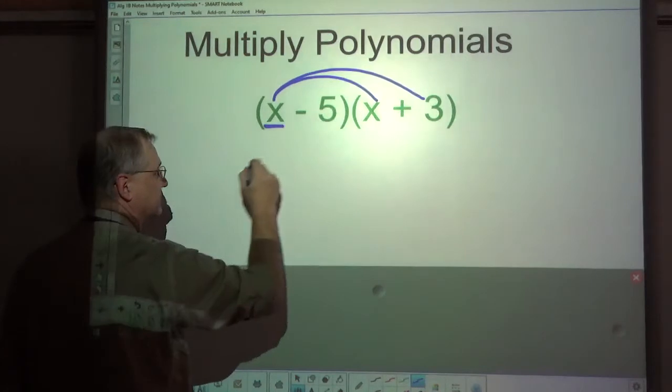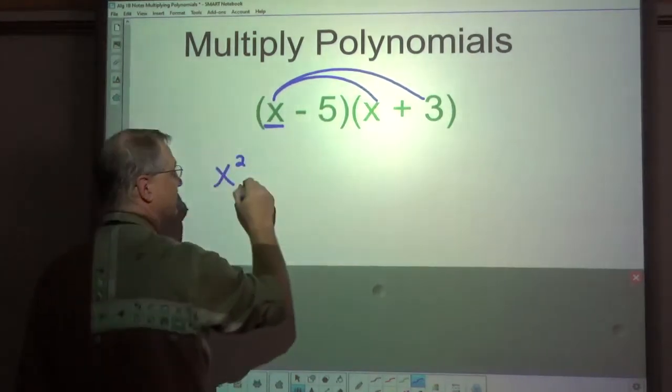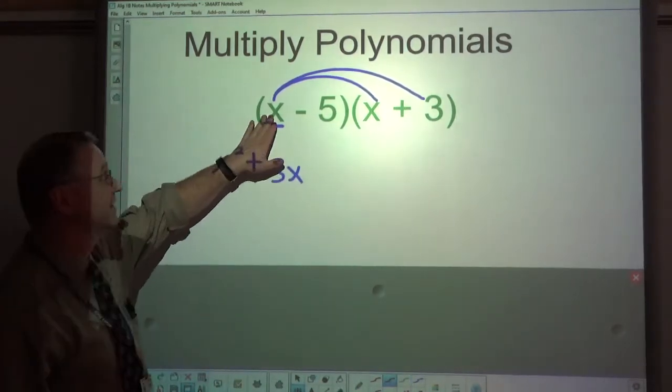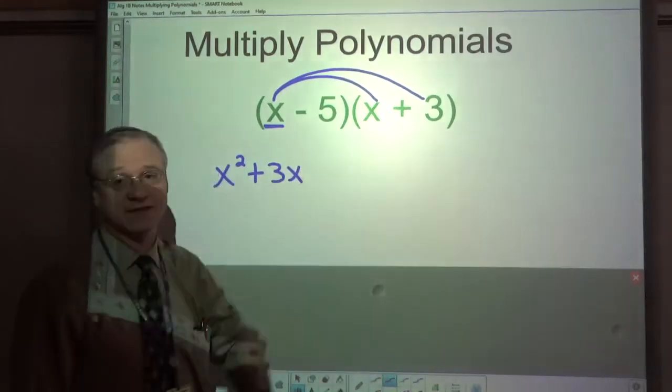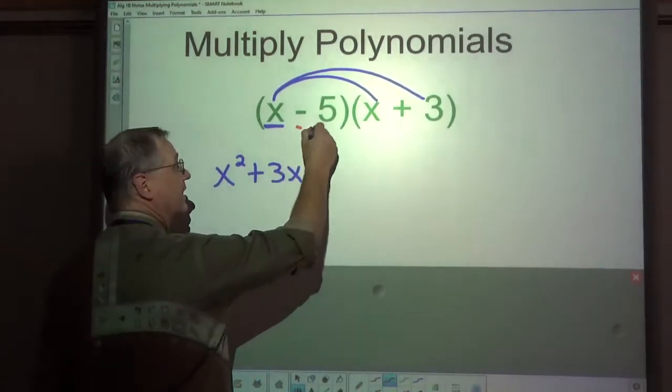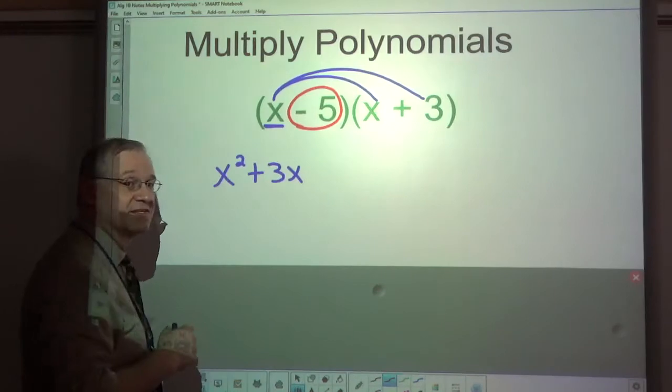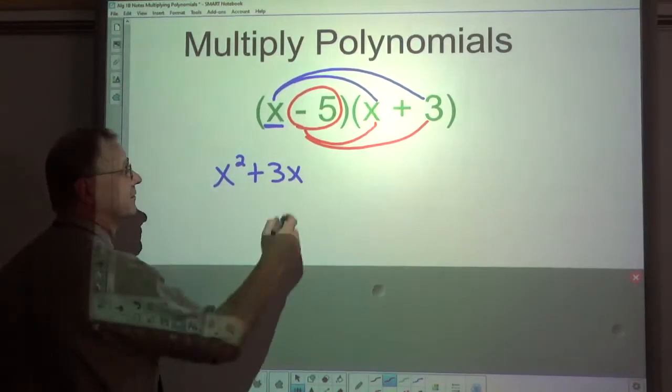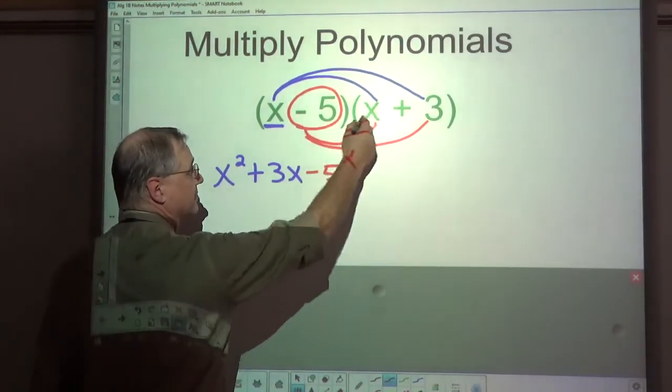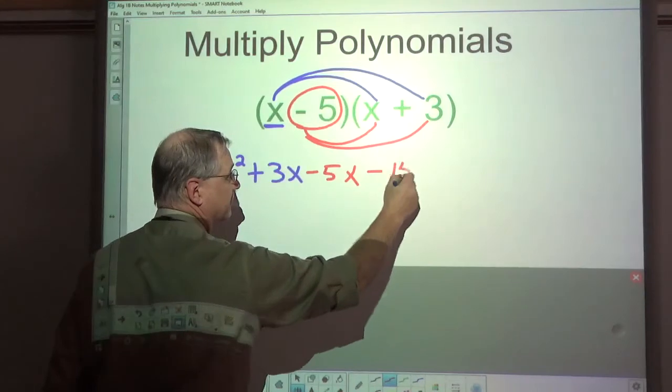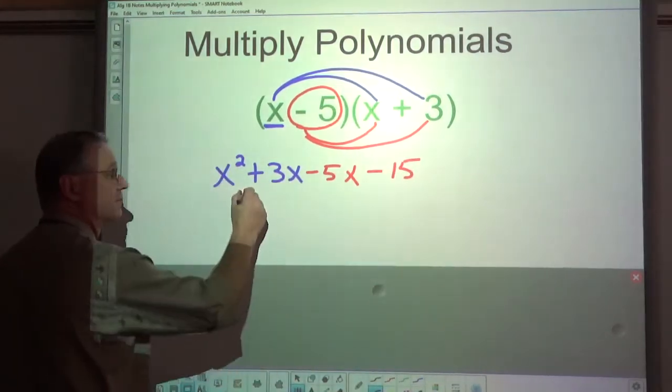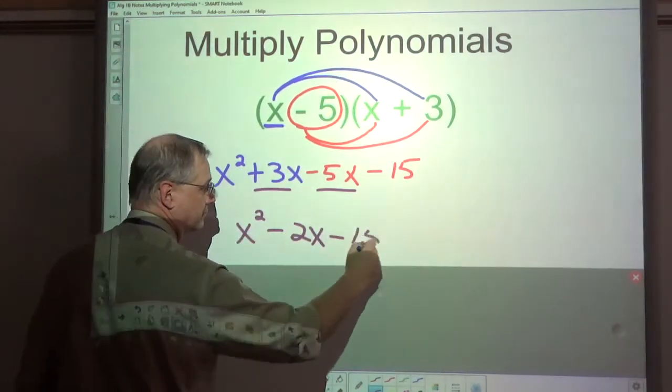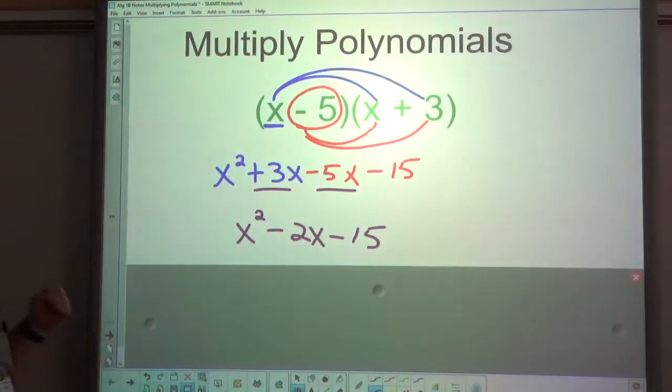So when I multiply x times x, I get x squared, x times 3, I get 3x. I have used this up by sending it to everything in the other parenthesis. Now that I've used that up, I'm going to include the sign with the second term and I'm going to distribute that to everything in the other parenthesis. So negative 5 times x is negative 5x and negative 15. And I finish it off by combining the like terms, x squared minus 2x minus 15.